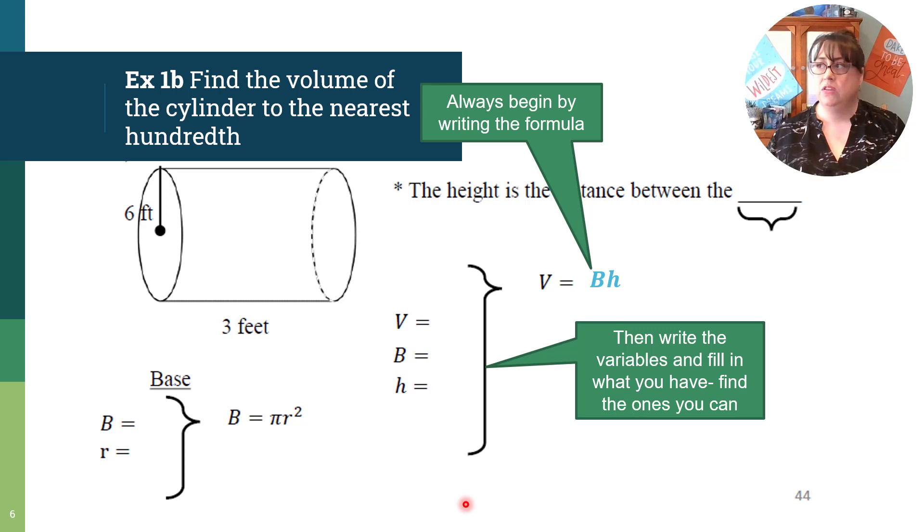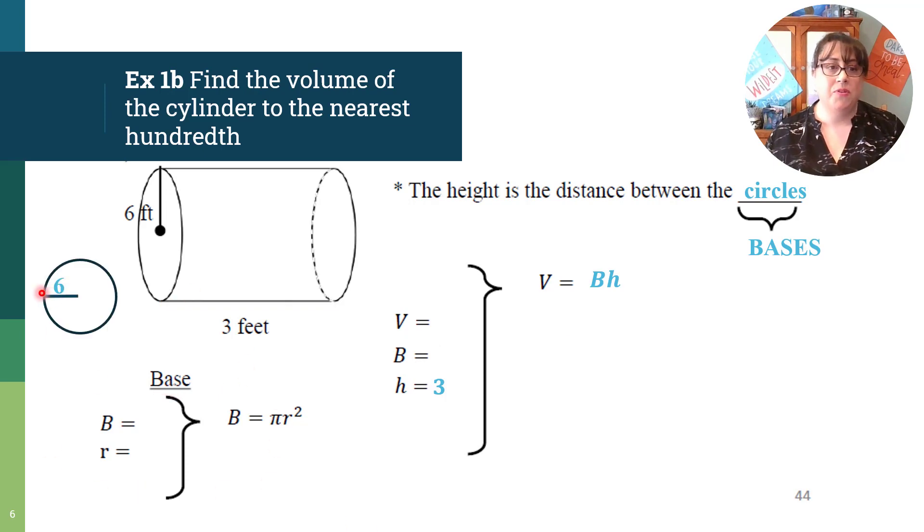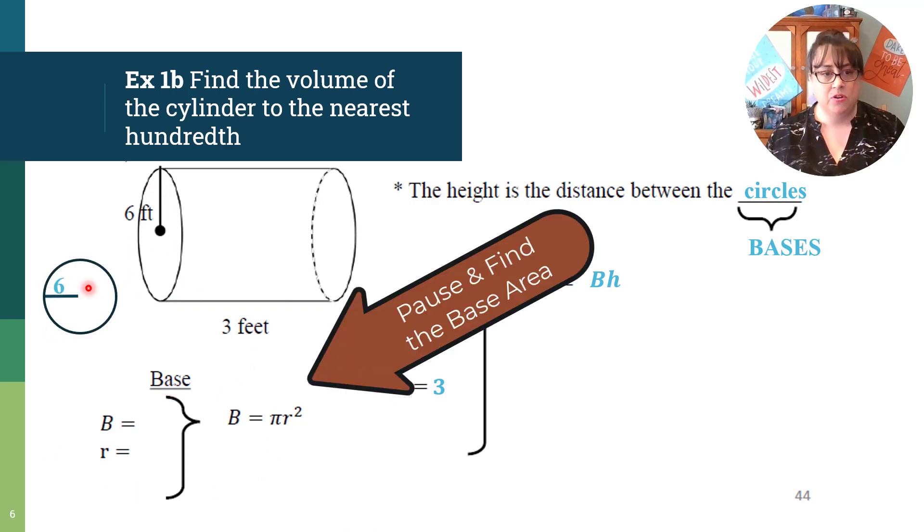So what do we have? When we look over here, we have to remind ourselves that the height is the distance between the circles. So here's our circles, so what's between those circles? Well, six is on the circles. So between the circles or the bases is right here, so that would be three. So our height is three. Beyond that, we don't have enough information. Now we have to go find the base area. So here's the base area. I kind of pulled the circle out, so here's the same circle and I pulled it out for us. So here's that. Go ahead and pause this and find the base area and come back.